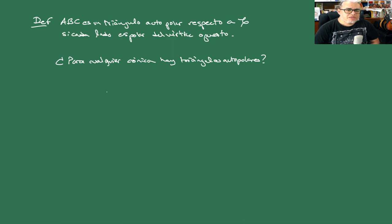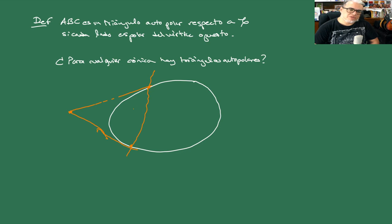La primera pregunta es: ¿Para cualquier cónica hay triángulos autopolares? Vamos a ver cómo le hacemos. Pintamos la cónica, elegimos un punto fuera, con anaranjado, construimos la polar.